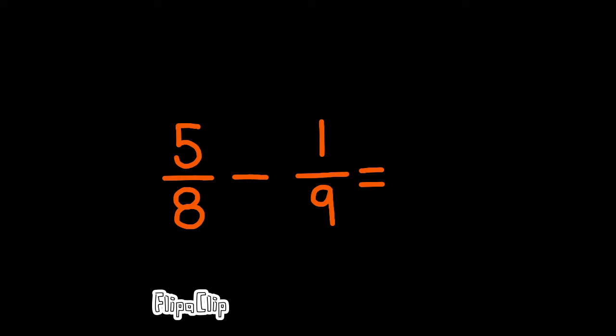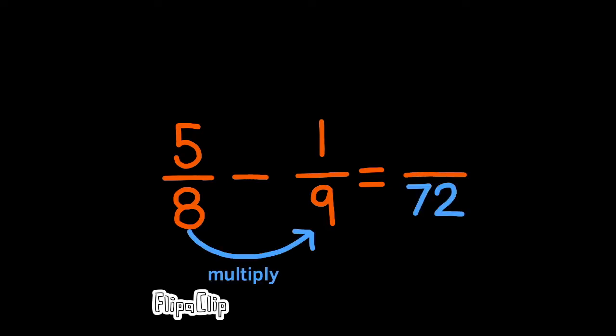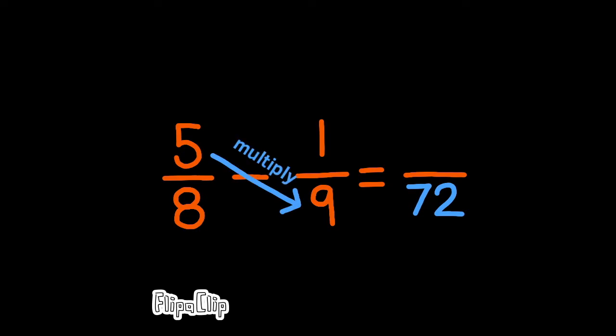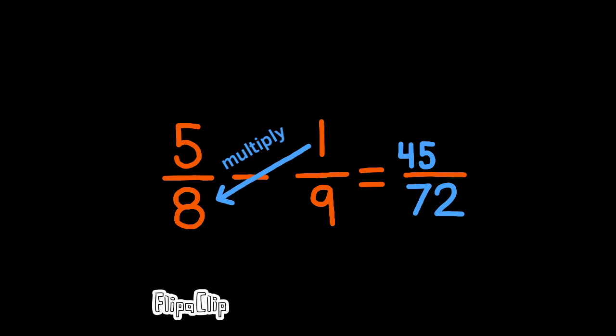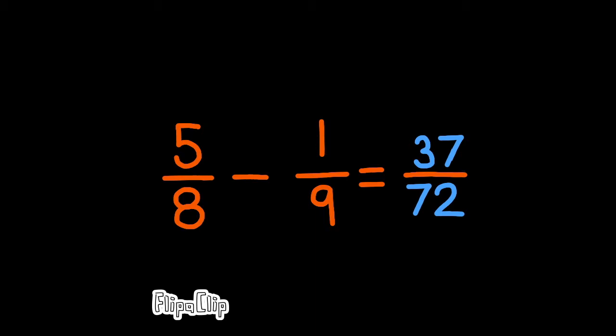Let's do one more before I give you one to try on your own: 5 eighths minus 1 ninth. Remember, the first step is multiply the denominators. Second step, multiply the left numerator by the right denominator. Third step, multiply the right numerator by the left denominator. Doing these three steps transformed 5 eighths minus 1 ninth into 45 minus 8 over 72, which represents 45 over 72 minus 8 over 72, which is equal to 37 over 72.